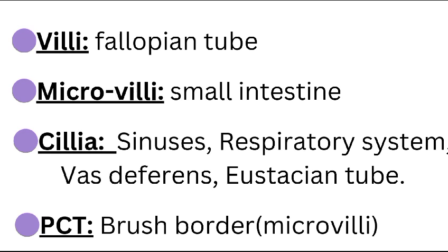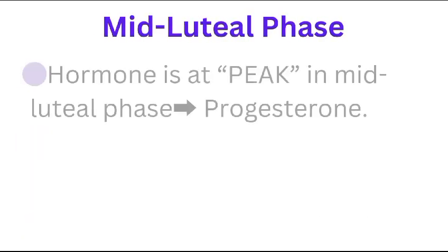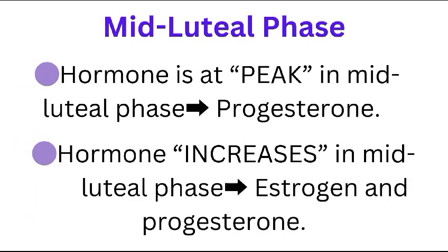Villi are found in the fallopian tube. Microvilli are present in the small intestine. Cilia are present in sinuses, the respiratory system, and the Eustachian tube. The proximal convoluted tubule of the kidney has brush borders, which are a form of microvilli.